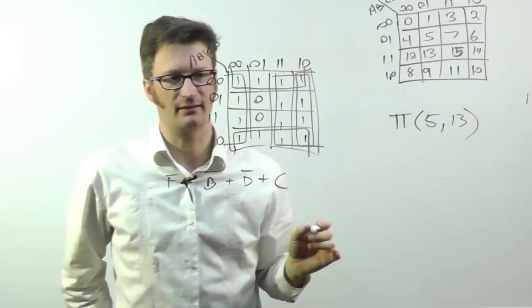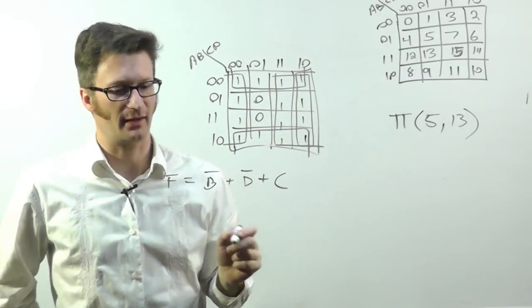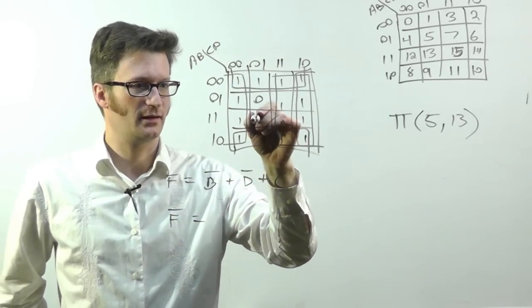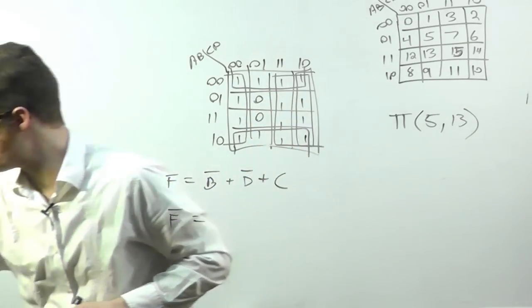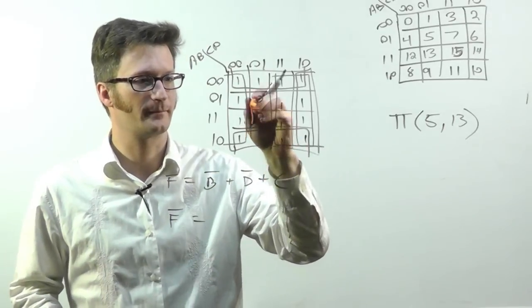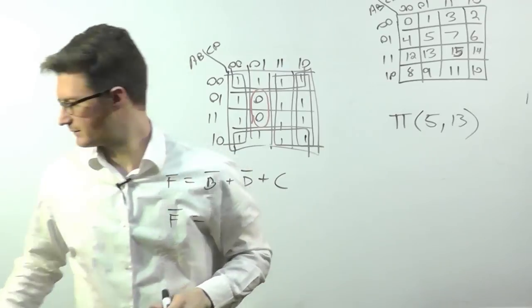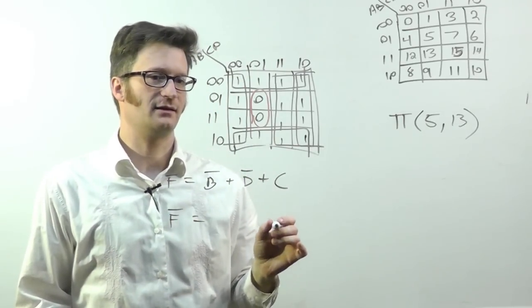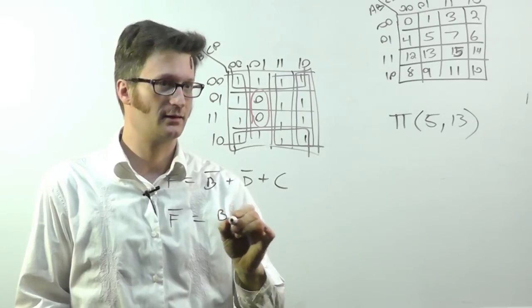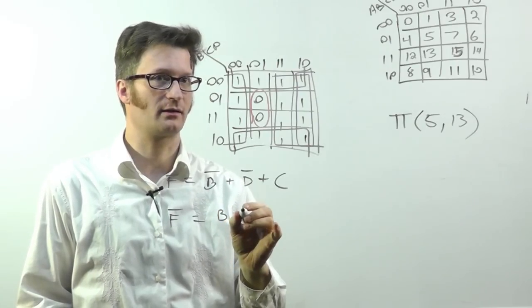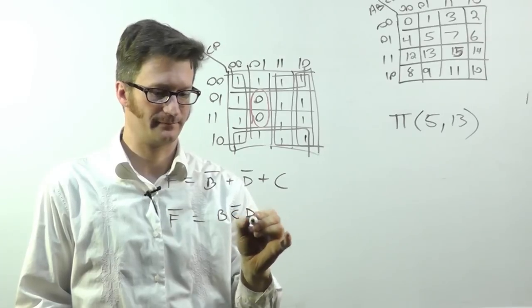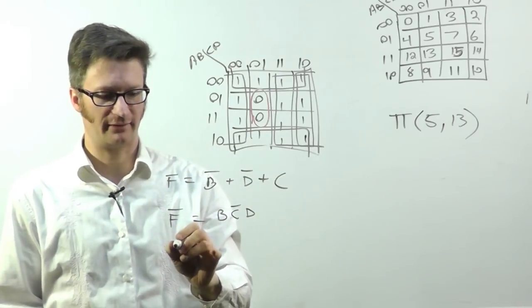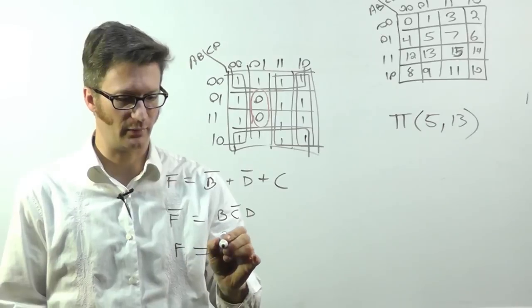Now another way of looking at this is, what if I didn't want to work from the ones? I could say F bar, because I'm picking zeros now. And if I were to pick these, which I'll just do with a different color. If I did that, I could say that what's common is B and C bar D. Well, we can't leave it in that form, really. So let's invert both sides.